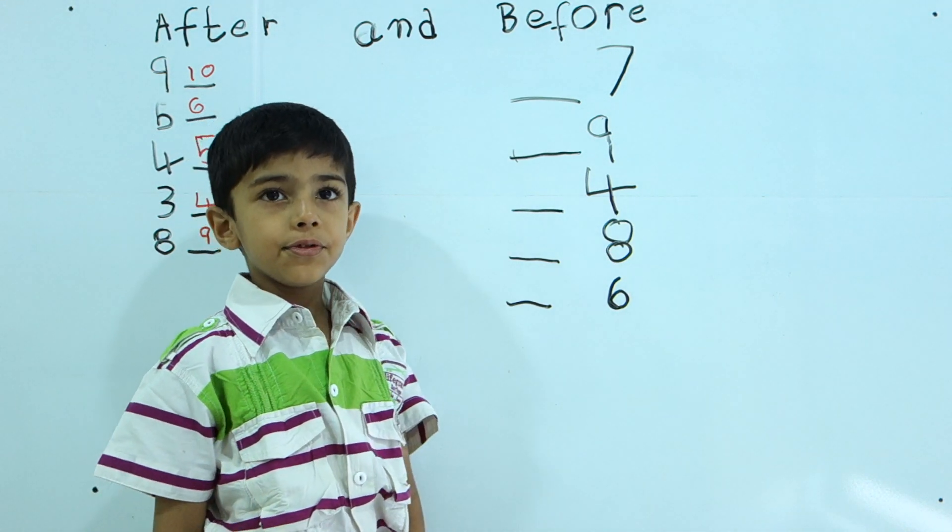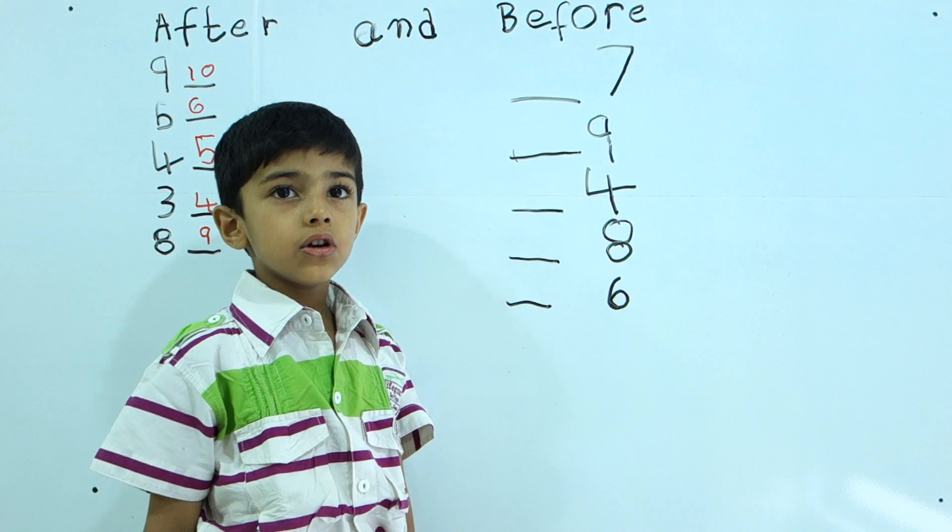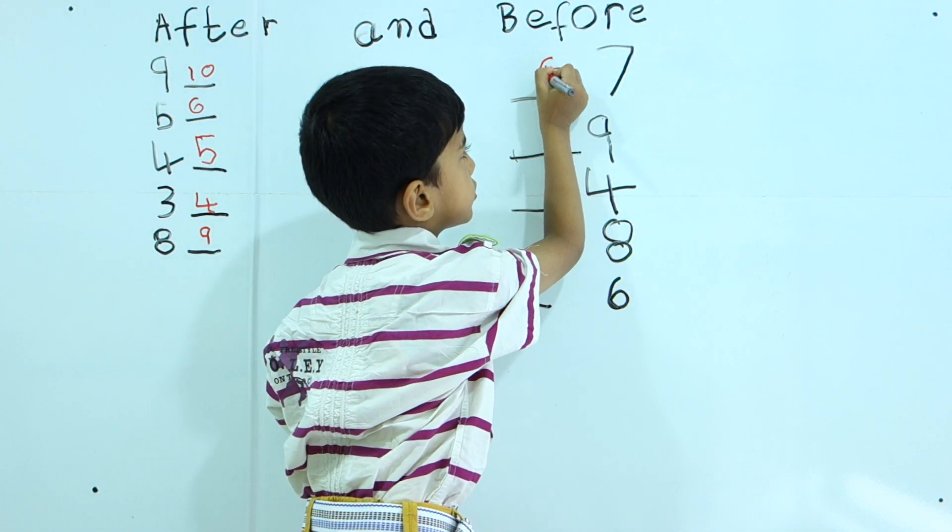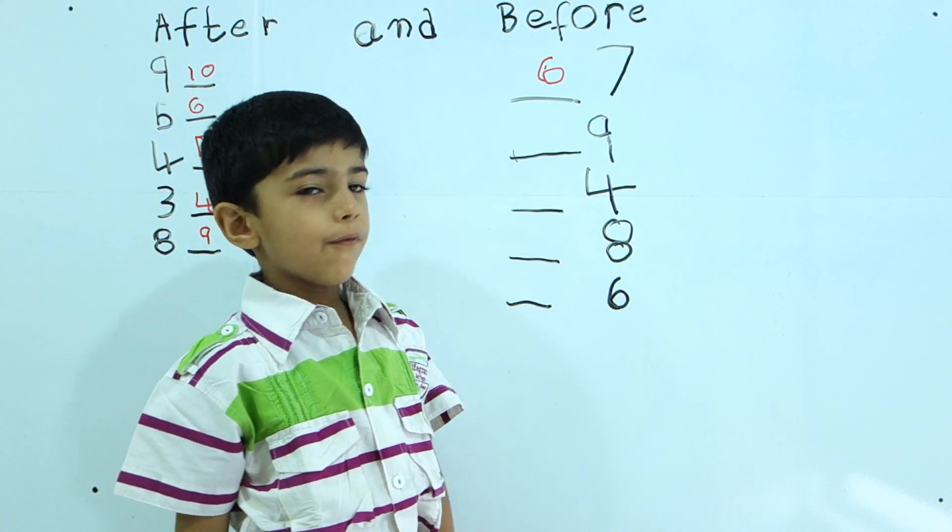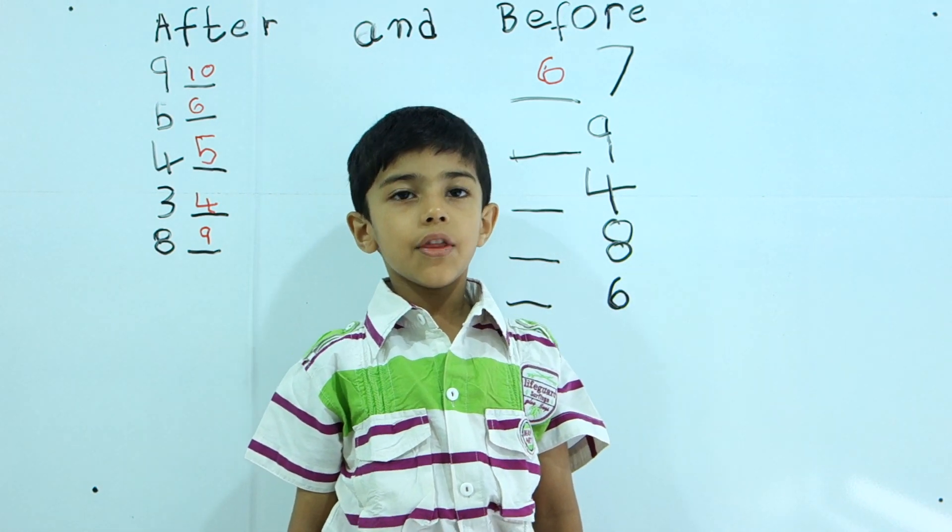One, two, three, four, five, six, seven, six. One, two, four, five, six, eight, nine.